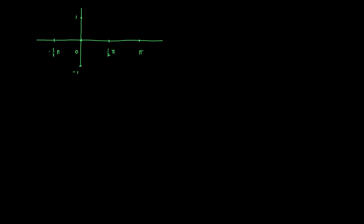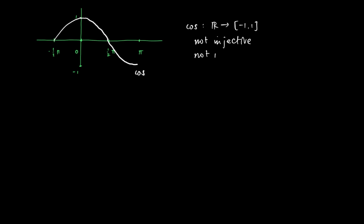Something similar holds for the cosine. The graph of the cosine is related to that of the sine — it's the graph of the sine shifted one-half pi to the left. The cosine defined on R has range [-1, 1], but it is not an injection. Performing the horizontal line test at one level of y gives two intersections with the graph of the cosine, so the cosine is not an invertible function.